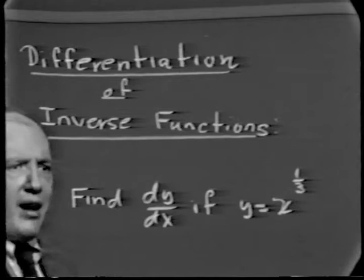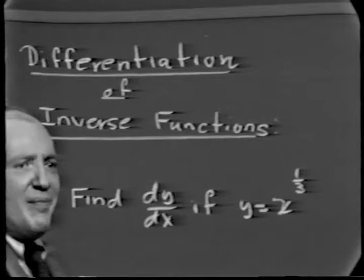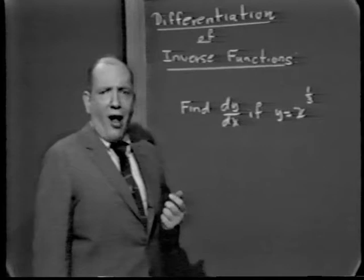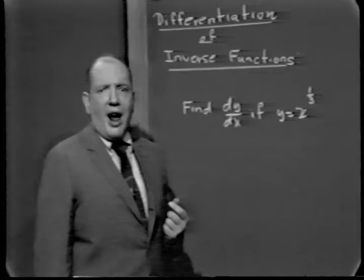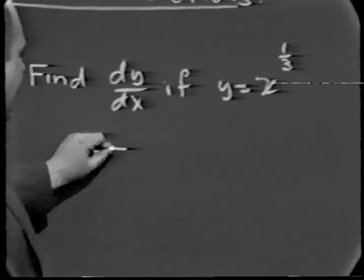The whole idea of inverse functions is that it gives us a chance to paraphrase — we can interchange the role of the dependent and the independent variables. Like any other form of paraphrase, even though two things may be synonymous, psychologically one of the two may be easier for us to visualize. In this particular case, if y equals x to the 1/3, another way of writing the same thing is x equals y cubed.